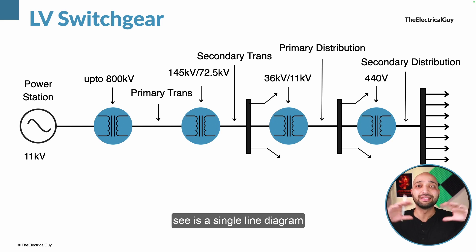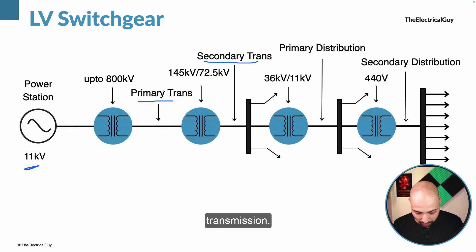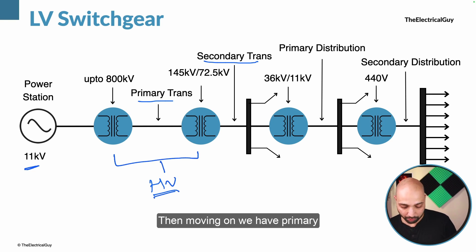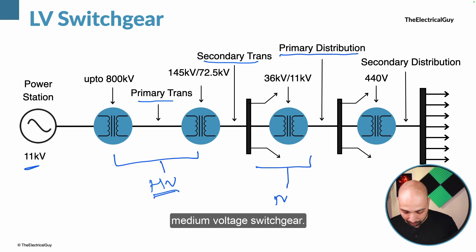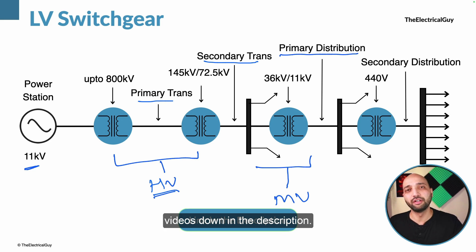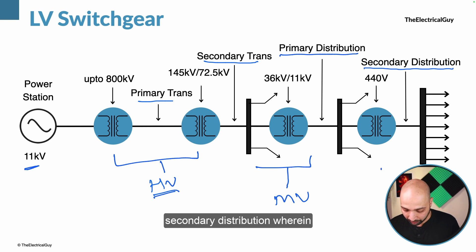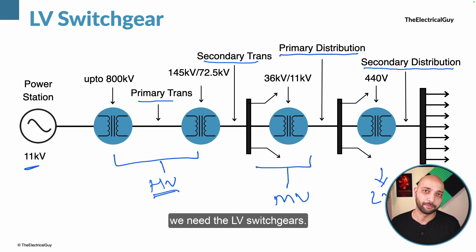On your screen you can see a single line diagram of a power system. Here we have the generation, the primary transmission, and the secondary transmission — this is where we need the HV switchgears. Then moving on we have primary distribution wherein we need the medium voltage switchgear. We have already talked about those in previous videos, links provided in the description. After primary distribution there is secondary distribution wherein we need the LV switchgears.